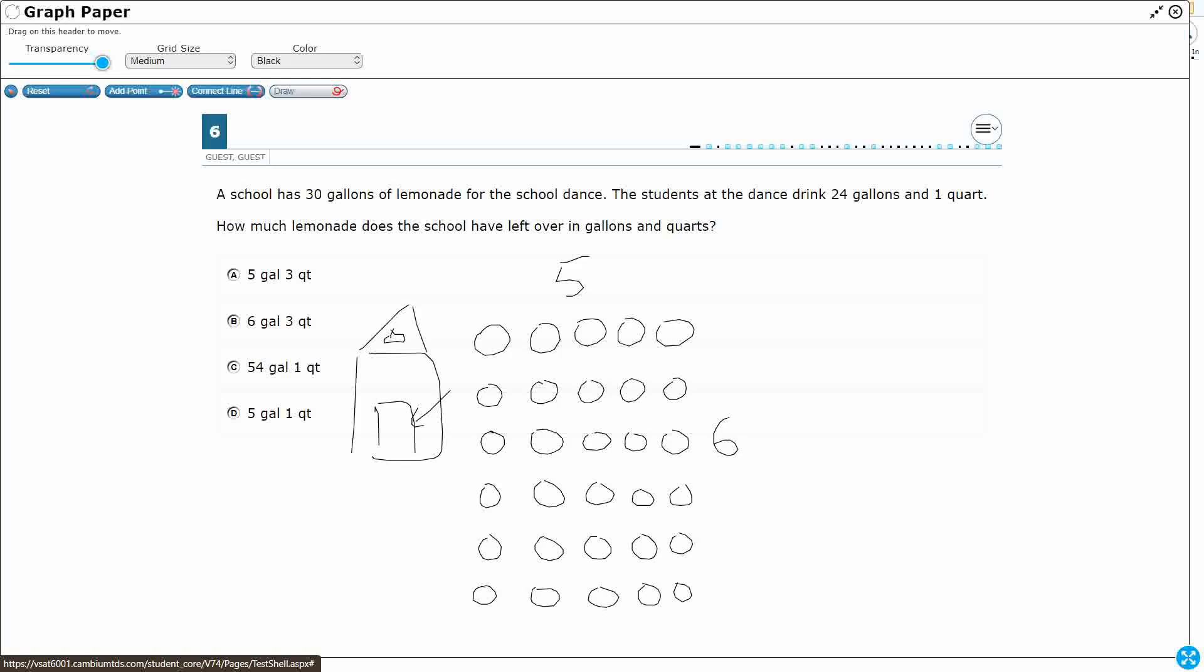Now, the students at the dance drink 24. Okay, so first, am I adding or subtracting here? If you are drinking gallons, you are not getting any extra. You're actually taking it away because it's being consumed. So our first step is realizing this is a subtraction problem. So they're going to drink 24 gallons. So really what I have here is 30 gallons minus 24 gallons. But it's not just 24 gallons.